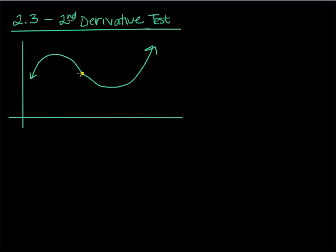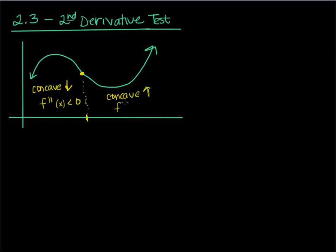So the second derivative — in this case I would have an inflection point right here. Over here, we know from 2.1 and 2.2 that we're concave down. That means f double prime of x is negative, or less than 0. And over here we're concave up, which tells me that the second derivative being positive implies concave up. And this point is what we call an inflection point because it changes concavity at that point.